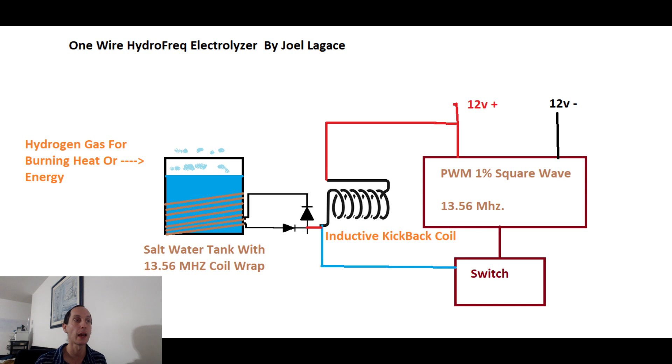So basically what I'm getting at is I came up with the OneWire Hydrofrequency Electrolyzer. Basically what this does is we found out recently that certain frequencies like 13.56 MHz does something interesting to water. Just by exposing the frequency close to water, it extracts the hydrogen from the water without using direct electrolysis like you would normally do or without using any other chemicals like magnesium powder or anything.